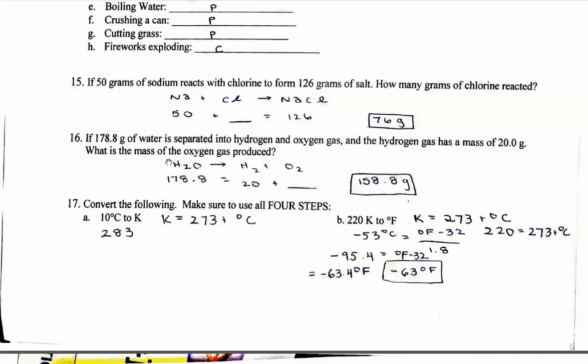Problem 16 is the exact same thing. You take H2O and make hydrogen and oxygen. I wrote H2 and O2, and could have written Cl2, because those are all diatomic elements, by the way. So you have 178.8 grams of water, and that makes 20 grams of hydrogen, and however much of O2 we don't know. And so all you need to do is just subtract. 178.8 minus 20, and you get 158.8.